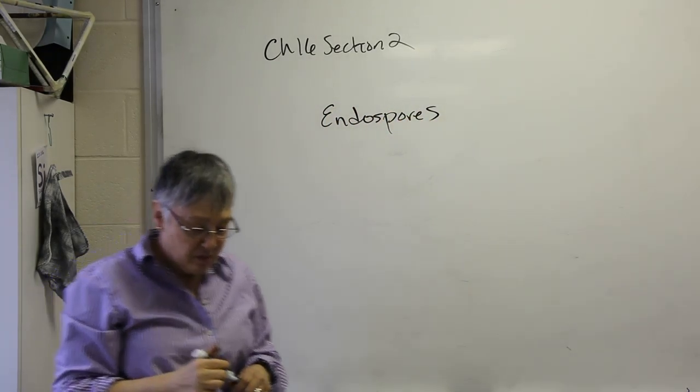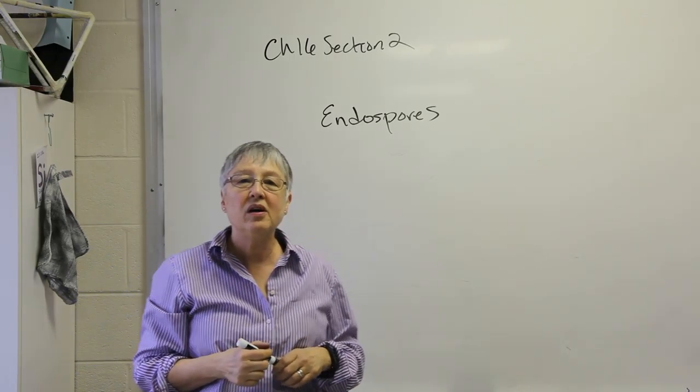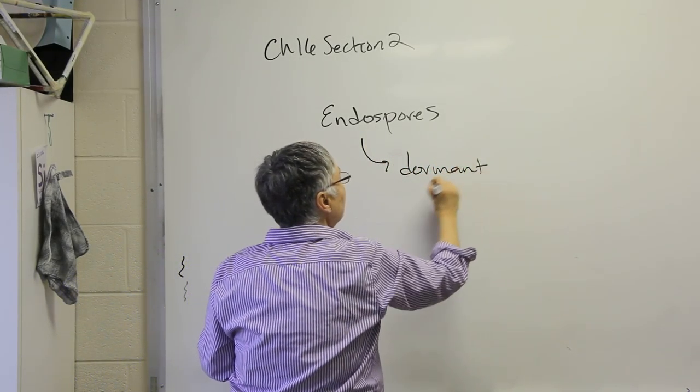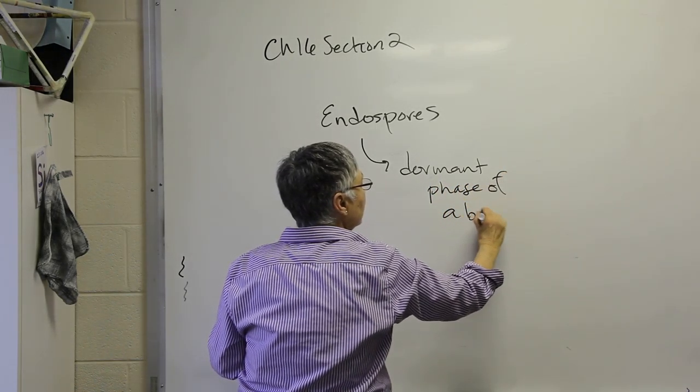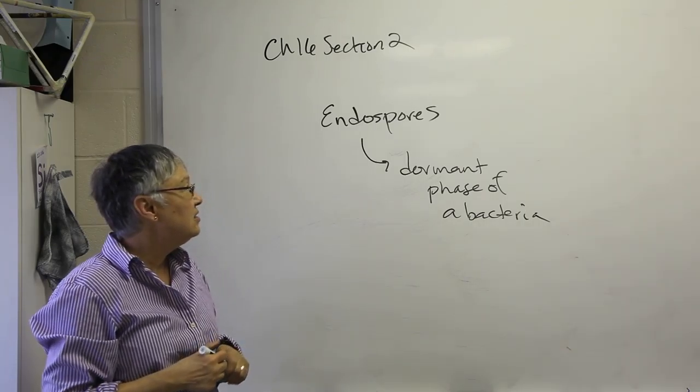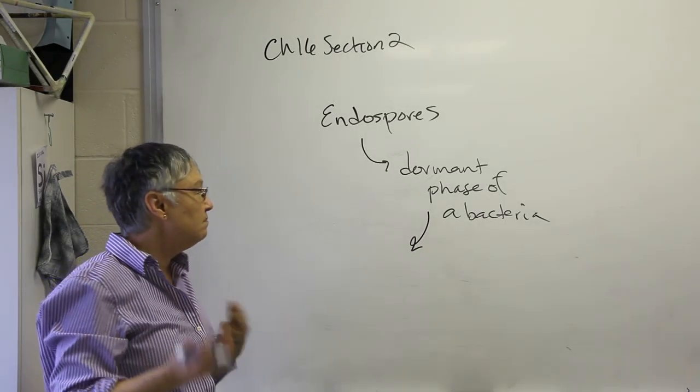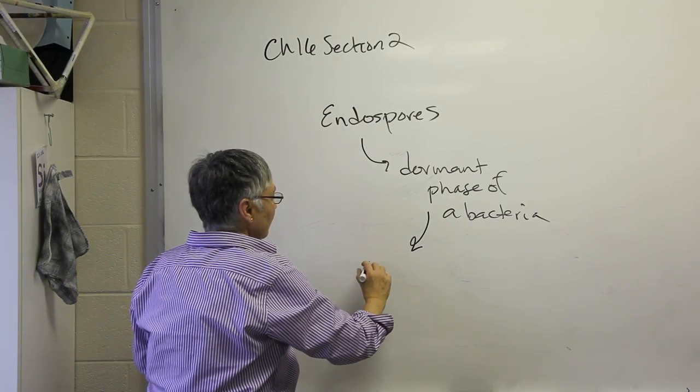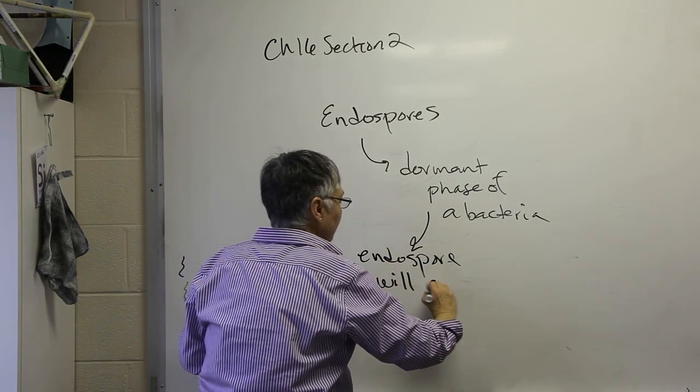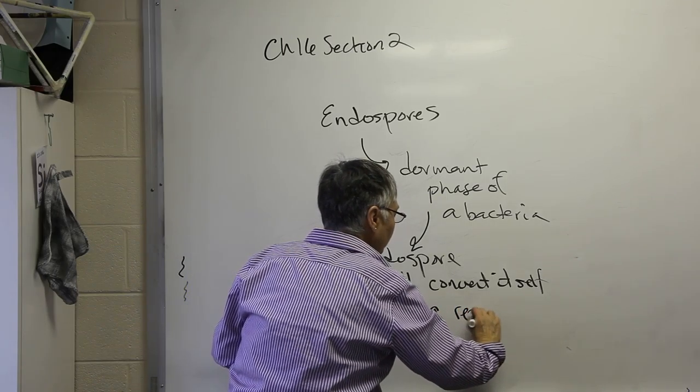Some bacteria are able to produce a very resistant form of their cell that's called an endospore. And so this really represents a dormant phase of a bacteria. And it's very resistant to drought and high temperatures, low temperatures, and so on. And this allows bacteria cells to survive extreme, sometimes not so favorable conditions. And then the endospore will convert itself to a reproducing bacteria.